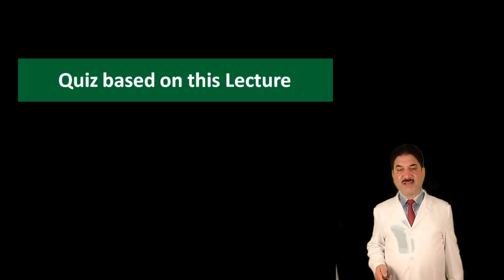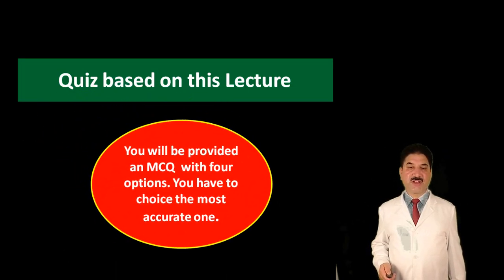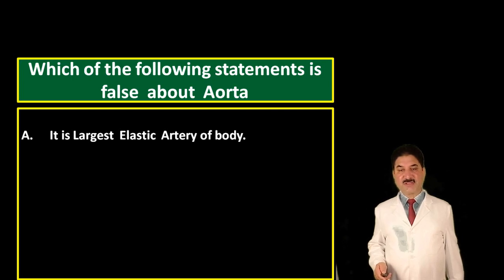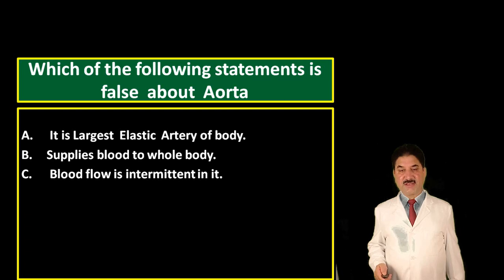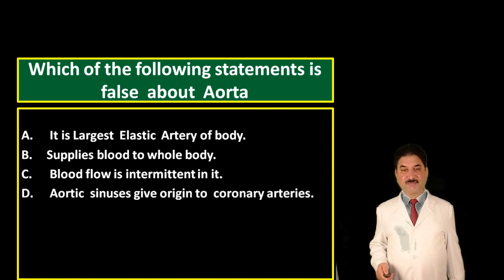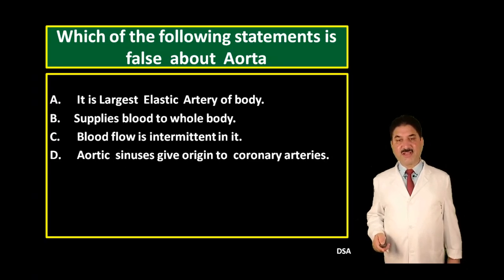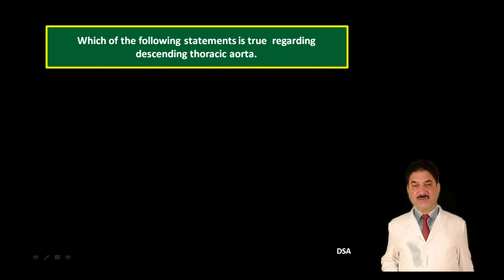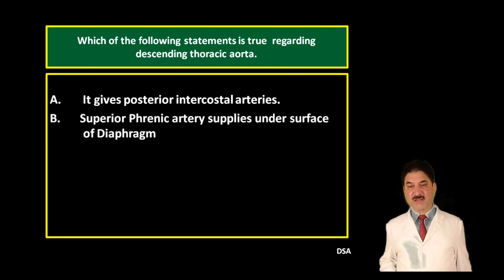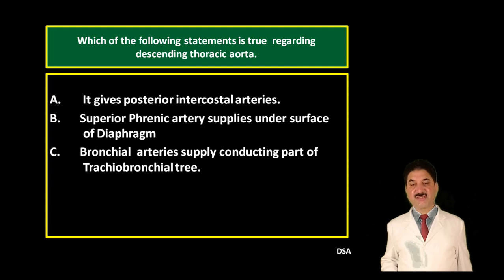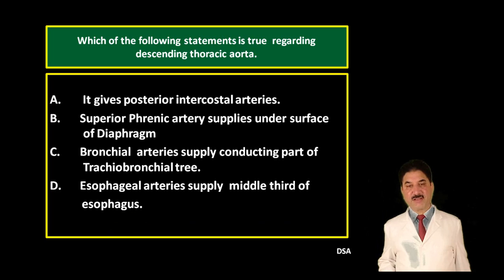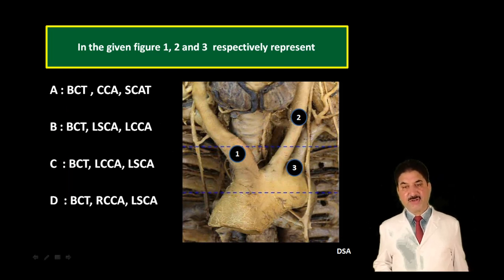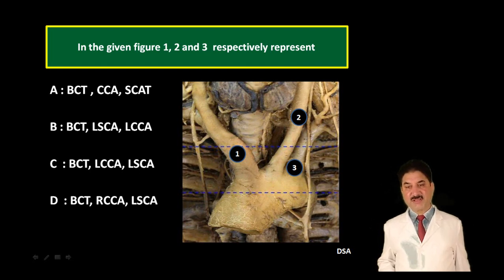Now let us go for a quiz based on this lecture. Which of the following statements is false about the aorta? Options: A — it is the largest elastic artery of the body; B — it supplies blood to the whole body; C — blood flow is intermittent; D — aortic sinuses give origin to the coronary arteries. C is the wrong option. Which of the following statements is true regarding the descending thoracic aorta? Options: A — it gives posterior intercostal arteries; B — the superior phrenic artery supplies the under surface of the diaphragm; C — the bronchial artery supplies the conducting part of the tracheobronchial tree; D — the esophageal artery supplies the middle third of the esophagus. B is the wrong statement. In the given figure, 1, 2, and 3 respectively represent: 1 — brachiocephalic trunk; 2 — left common carotid artery; 3 — left subclavian artery.